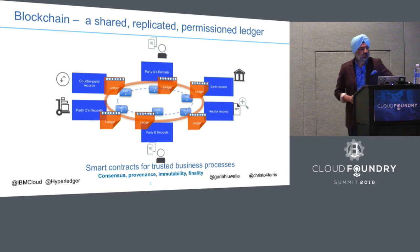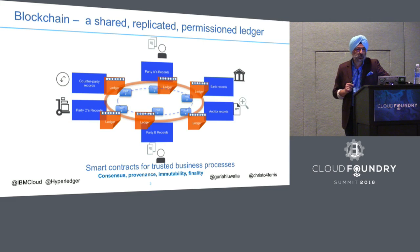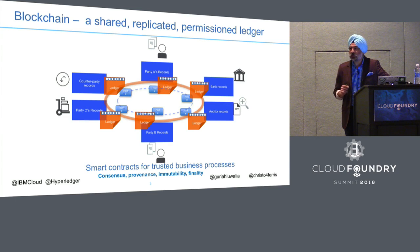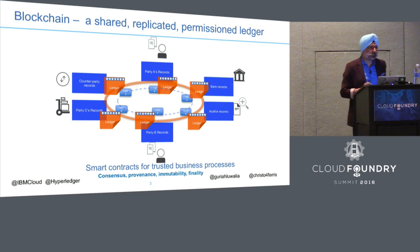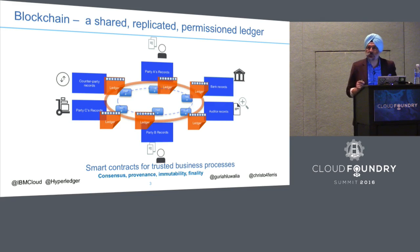Blockchain essentials: the key distinction is that blockchain is decentralized and has replicated state and replicated content across all nodes. There is consistency, and how we arrive at that consistency — the teaser — is through consensus, which has to precede the replication.